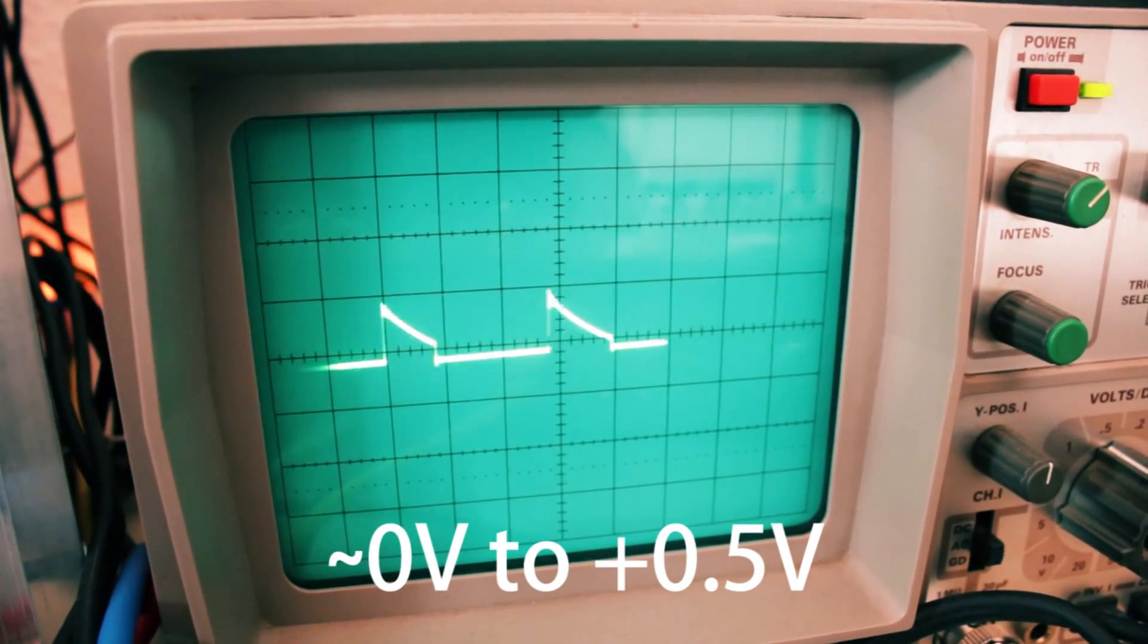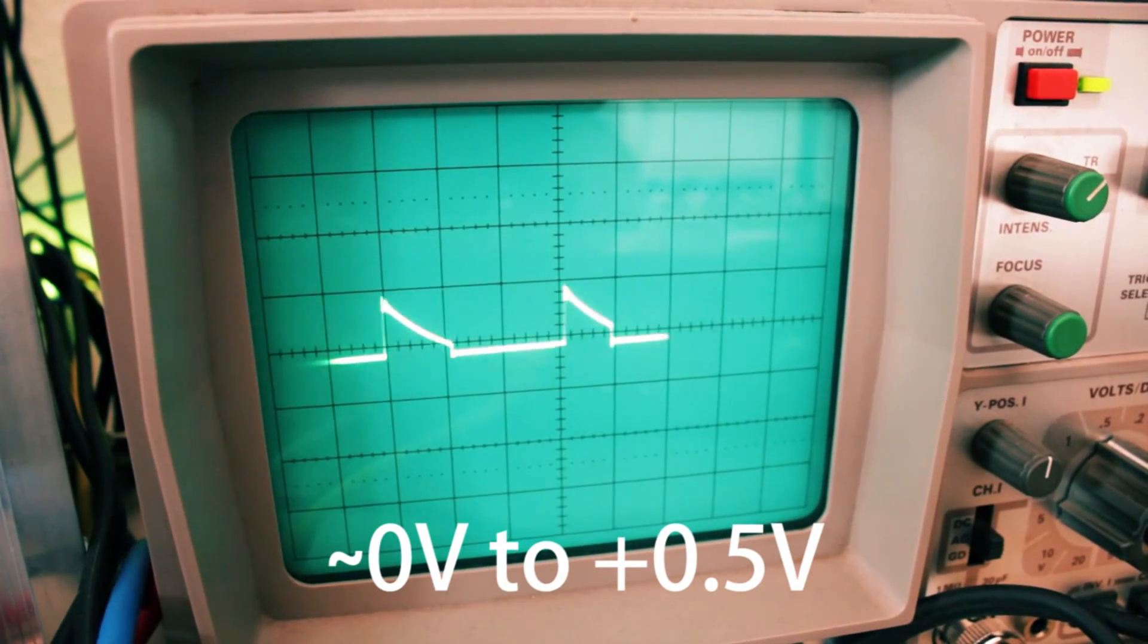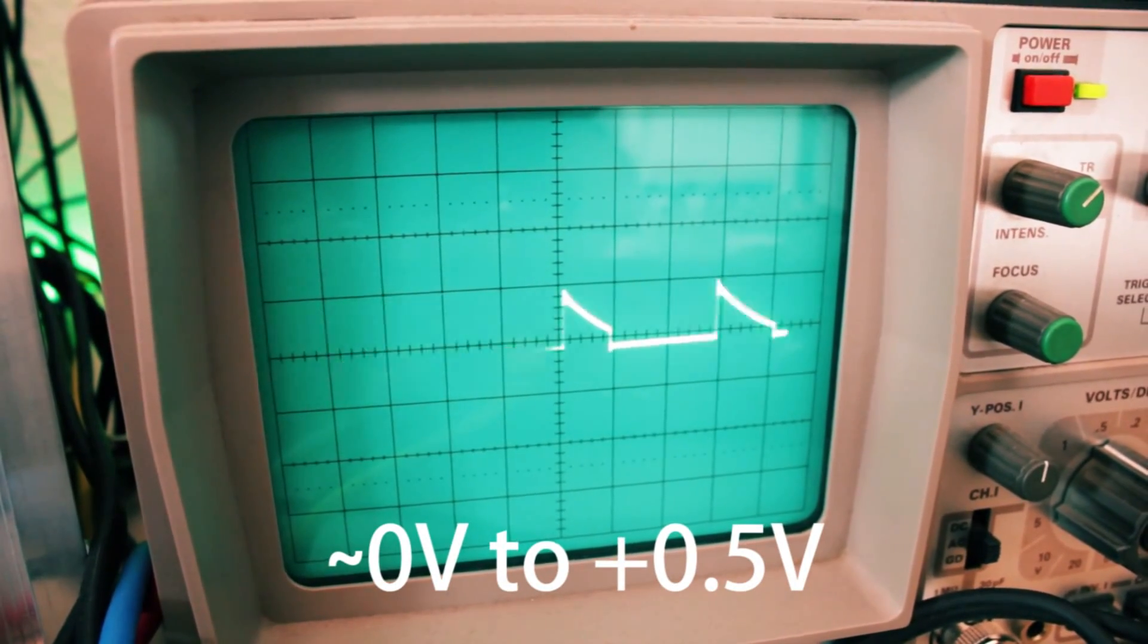Those 0.5 volts are usually not enough to trigger synthesizers, so you have to amplify the signal a little bit, usually at least to 1 volt.